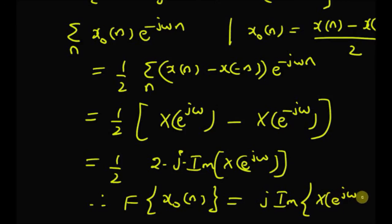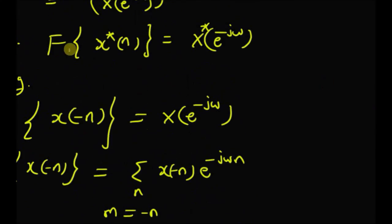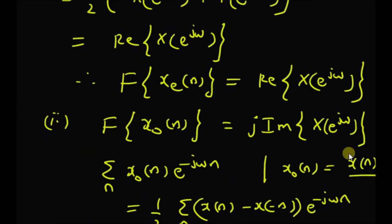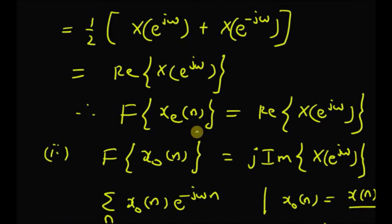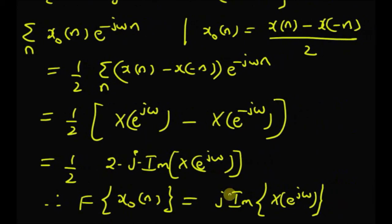To summarize, in this video we looked at three properties. First, the conjugation property: the DTFT of x*(n) equals the conjugate of the DTFT with ω replaced by −ω. Second, the folding property: the DTFT of x(−n) equals X(e^{−jω}), i.e., ω is replaced by −ω. Finally, the DTFT of the even component equals the real part of the original DTFT, and the DTFT of the odd component equals j times the imaginary part of the original DTFT. Thanks for watching.